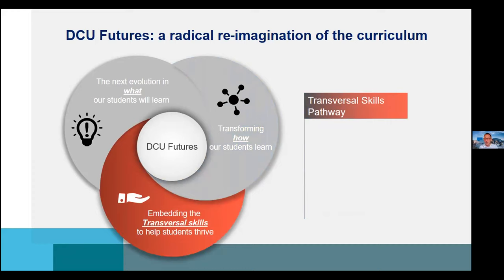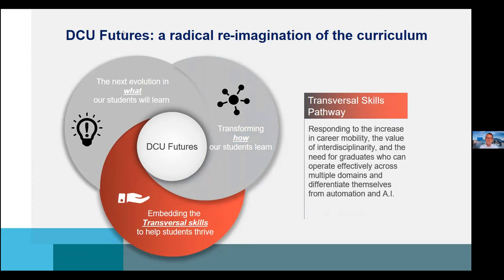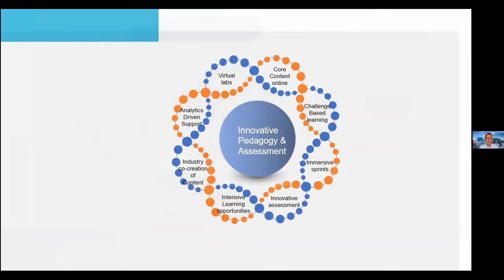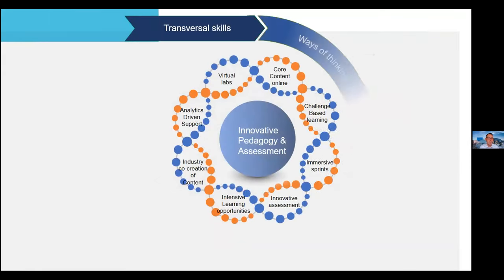The third big component is transversal skills. This responds to the fact that graduates are going to be more career mobile than ever before — changing careers, not just jobs — and working longer. There's the importance of applying skills across disciplines and domains, and the narrative around the potential threat of automation and artificial intelligence. Transversal skills are fundamentally human skills that, at this point in time and for the foreseeable future, cannot be replicated by automation or AI — differentiating humans from what technology can do.